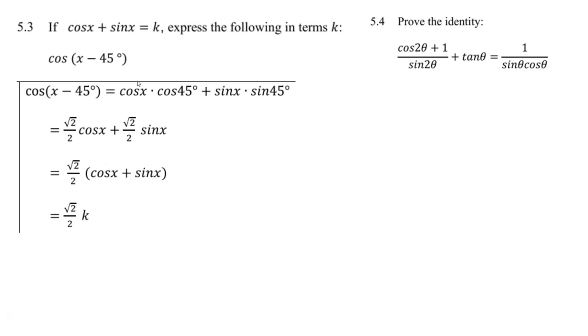Oh, that cos x plus sine x, they said that was equal to k. So we just write a k there. And then we've done it. We've expressed this whole thing, cos of x minus 45 degrees, in terms of k, root two over two times k.